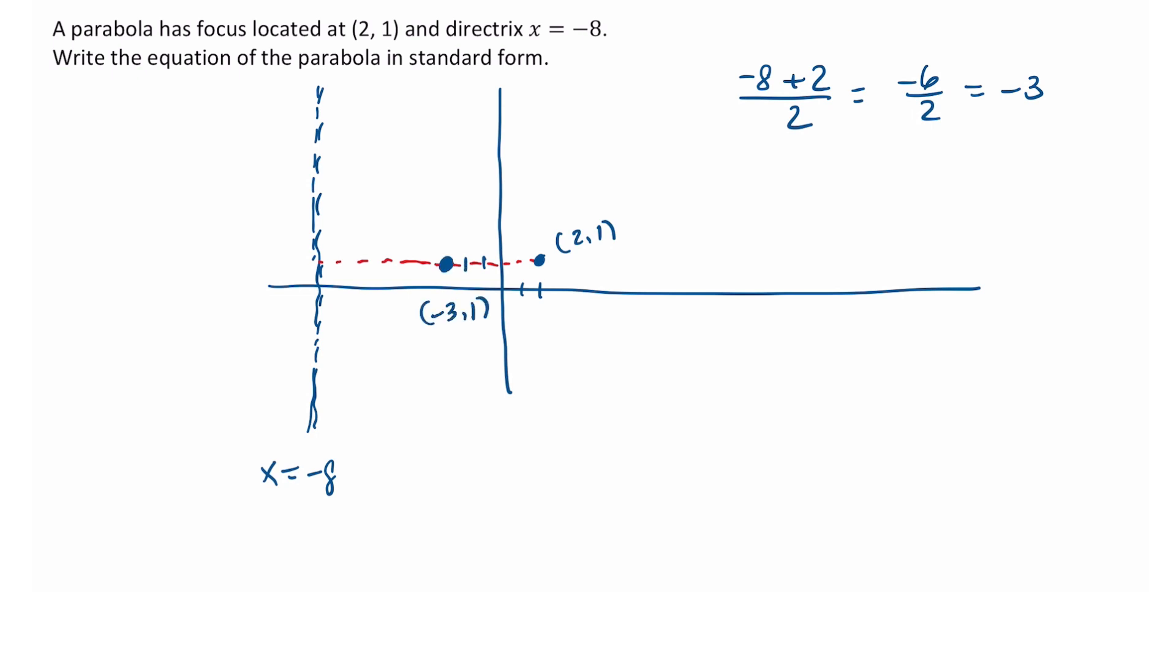Because of the way the directrix is positioned relative to the vertex and the focus, I know that my parabola is going to open to the right. So now let's take our standard form and fill in the details. Since this is a horizontally opening parabola, we know it's going to have the standard form (y - k)² = 4p(x - h).